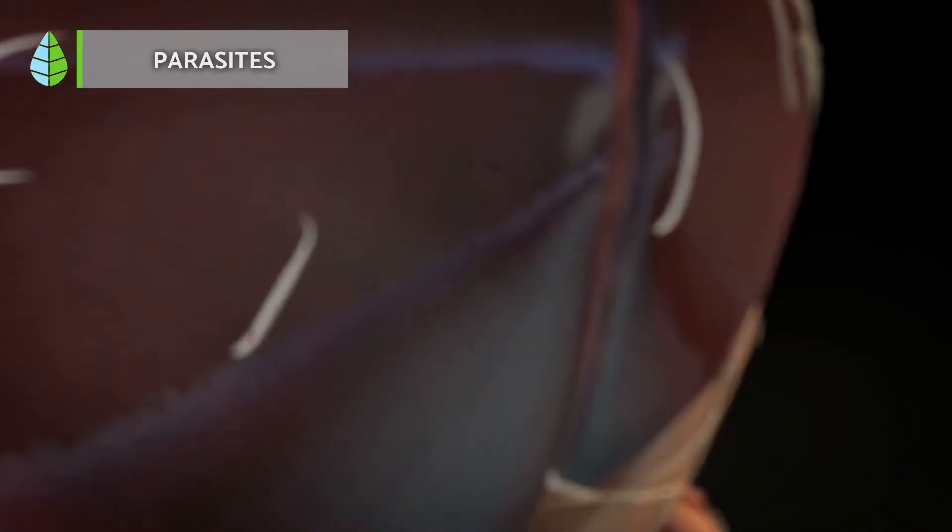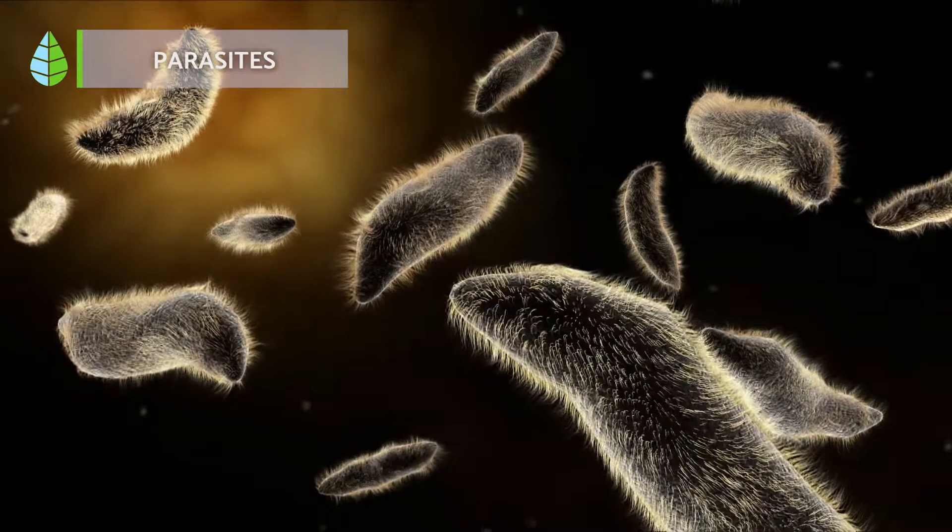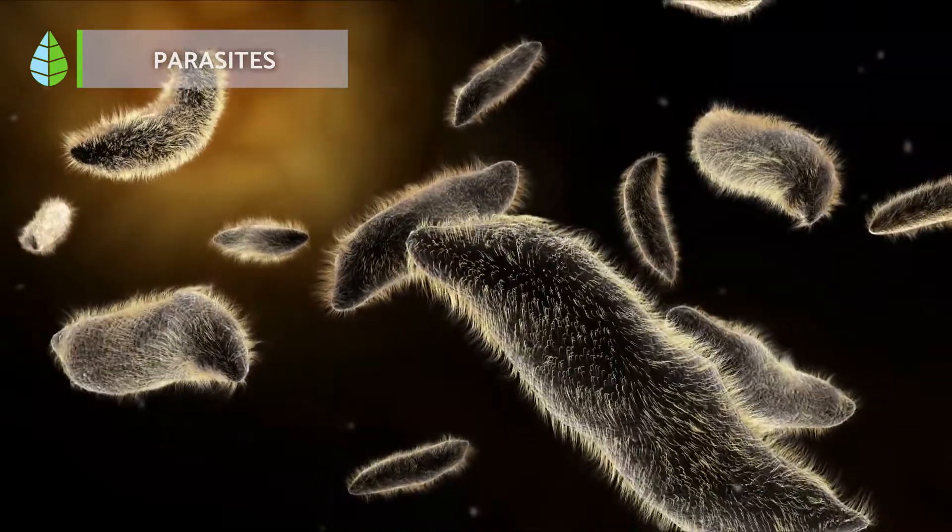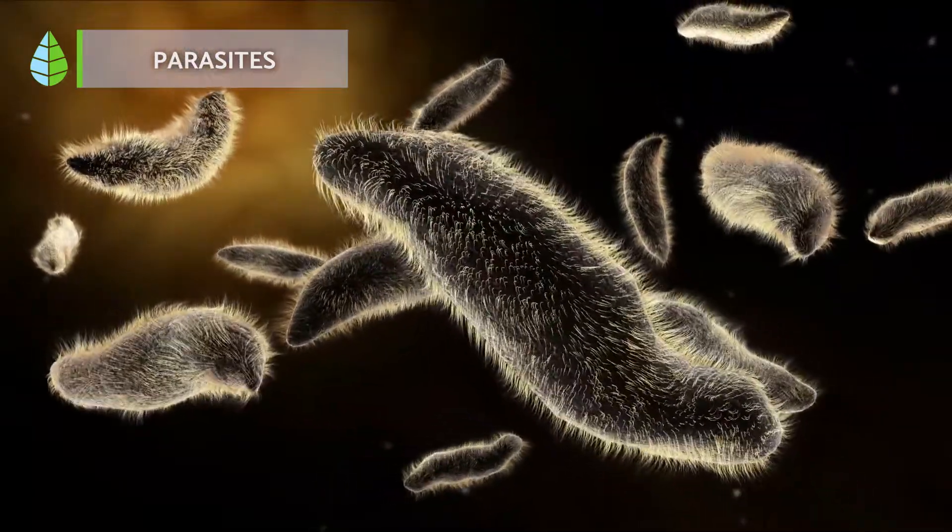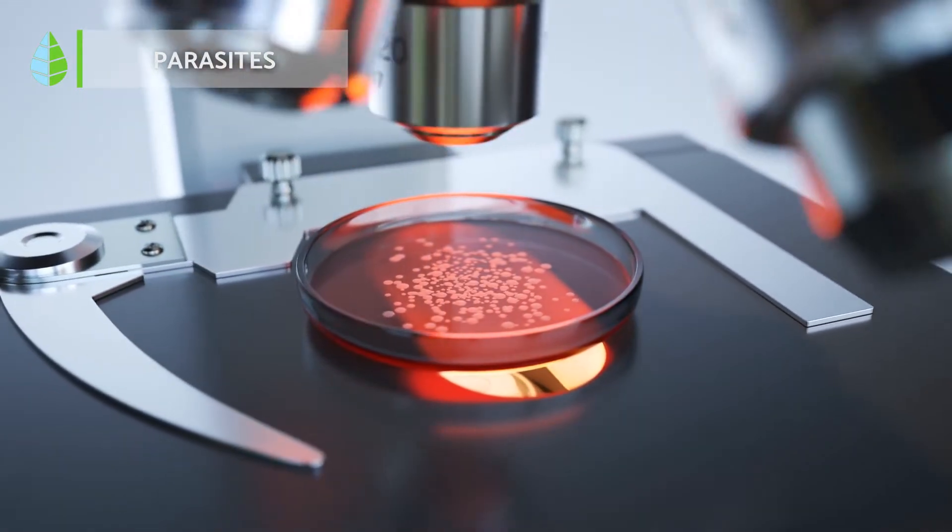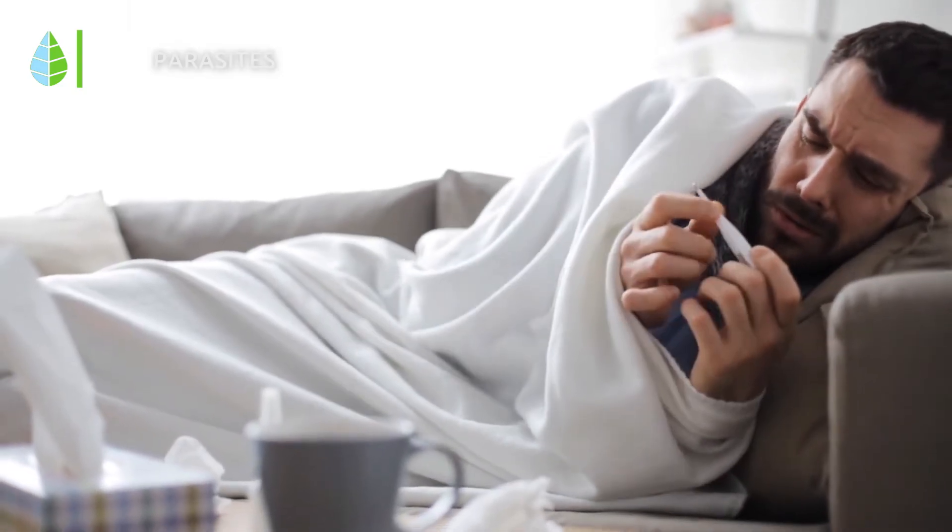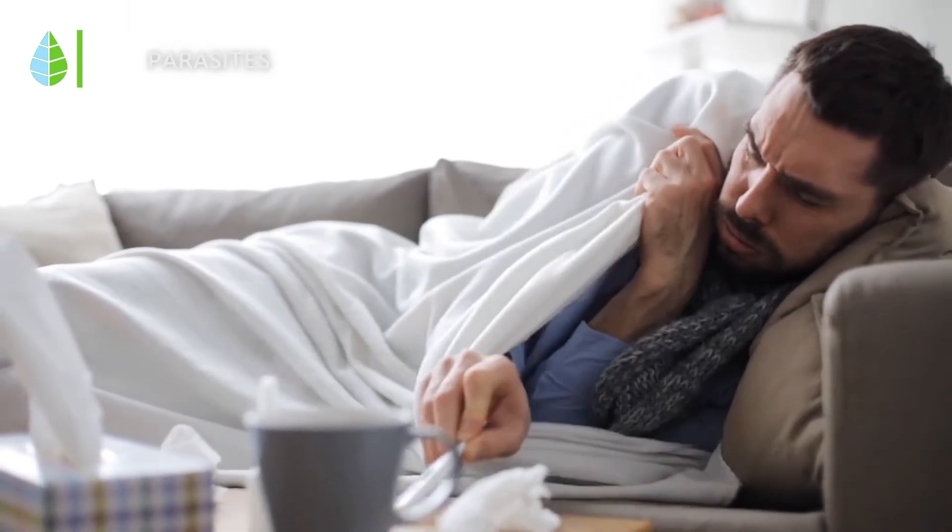Parasites. Parasites include protozoa, such as amoebas, and helminths like worms. Protozoa are unicellular, while helminths and worms are multicellular. Although parasites are typically not classified as microorganisms, the study of microbiology often overlaps with parasitology.